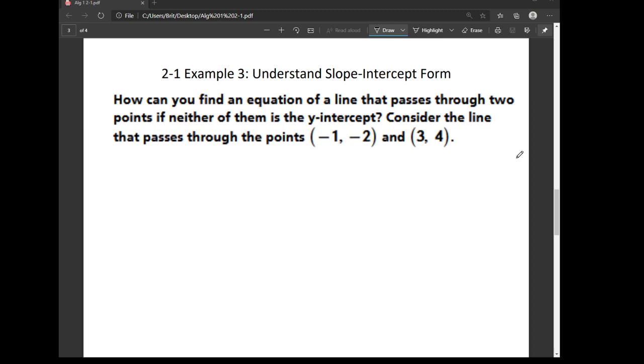The purpose of this example is to understand the slope intercept form. Here we are given two points, and neither of them is the y intercept, and we are asked to write the equation of the line in slope intercept form. So remember that's our form, y equals mx plus b.